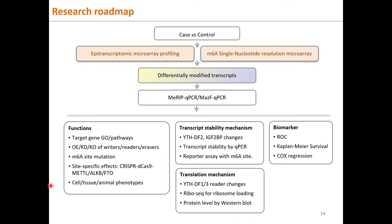In a typical M6A epitranscriptomic profiling study, differentially modified RNAs are profiled based on their M6A RNA abundance and modification percentage using ArrayStar Epitranscriptomic Array or single-base-resolution MAZF array. Those candidates are usually validated by MeRIP qPCR or MAZF qPCR. M6A functions for the differentially modified RNAs can be studied by gene ontological and pathway enrichment analyses, overexpression, knockdown, or knockout of M6A writers, readers, and erasers, M6A site mutation, or CRISPR-dCas13-guided METTL3/ALKBH5/FTO modification to observe phenotypical changes in cell, tissue, or animal models.